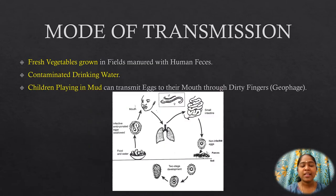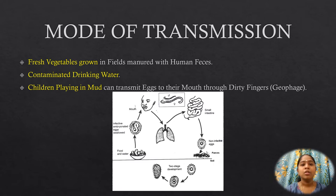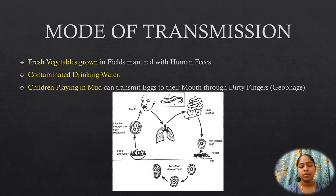Mode of transmission of Ascaris. Infection occurs when an egg containing the infective rhabditiform larva is swallowed. A frequent mode of transmission is through fresh vegetables grown in fields manured with human feces — the night soil. Infection may also be transmitted through contaminated drinking water. Children playing in mud can transmit eggs to their mouths through dirty fingers. Where soil contamination is heavy due to indiscriminate defecation, eggs can sometimes become airborne in windswept dust, be inhaled, and then swallowed.